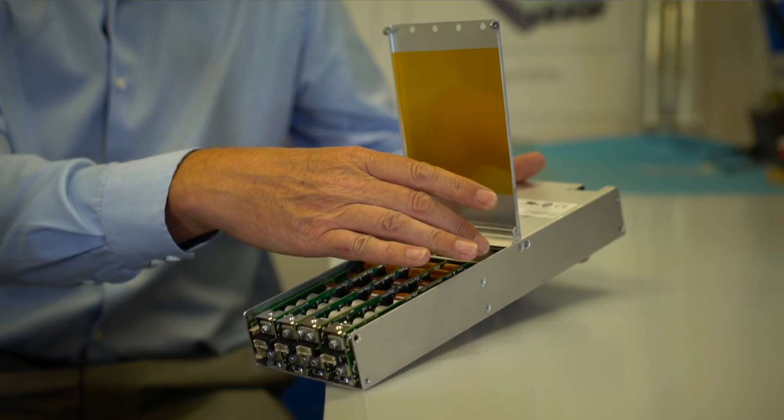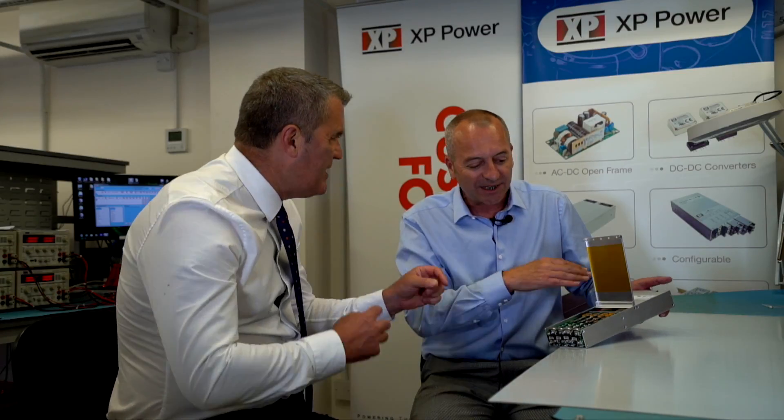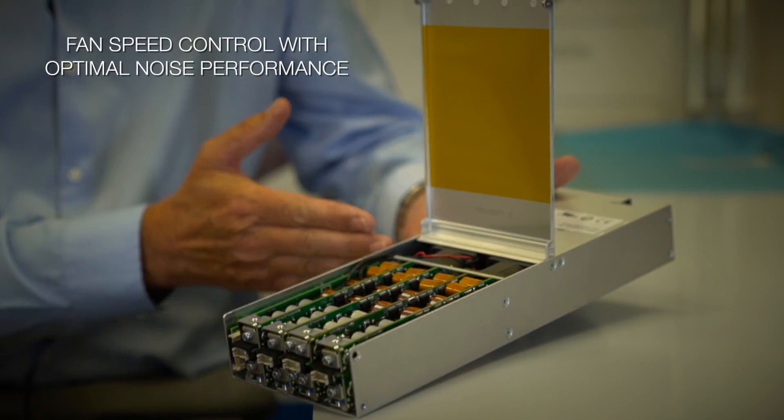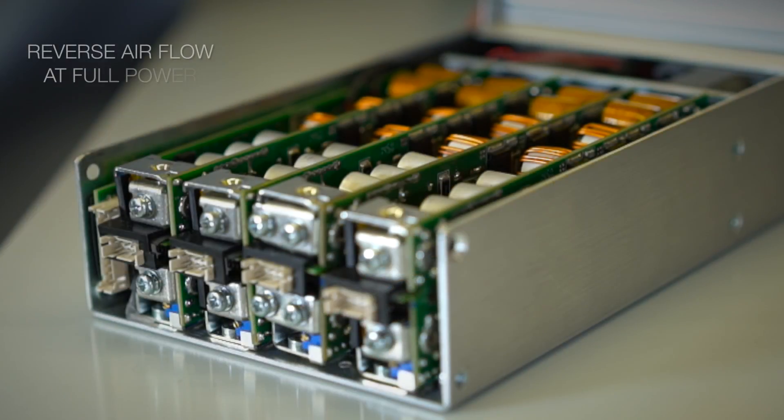As you can see, the fan is centrally mounted inside the unit. That whole assembly is removable, so we can take it out, turn it around, and put it in the other way. Why is that relevant? Because when the customer puts this product into their system, they might have airflow from front to back or back to front. We need to configure the power supply to match those system airflow requirements without having to change anything else in the product.